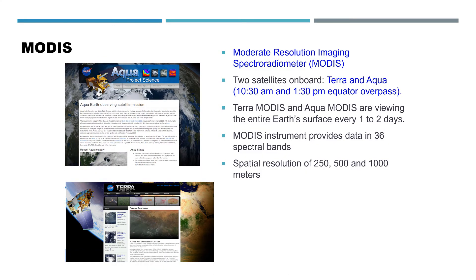So what is MODIS? MODIS is a Moderate Resolution Imaging Spectroradiometer. It has two satellites on board — the first is Terra and the second is Aqua.